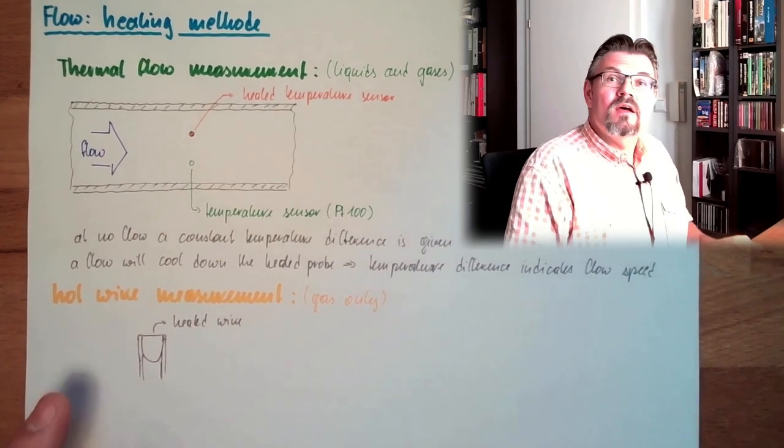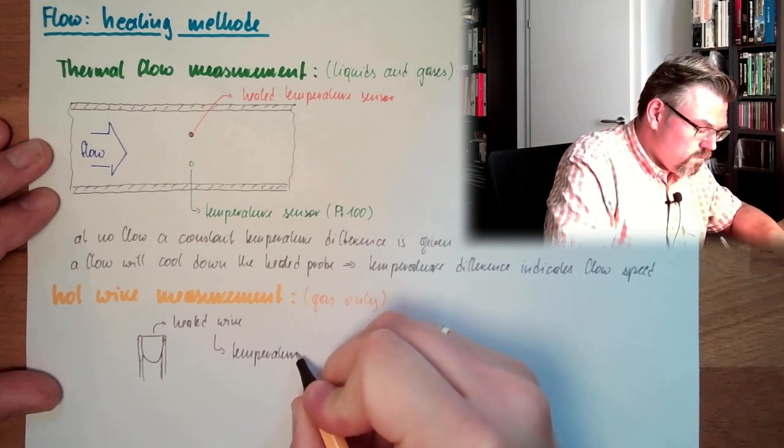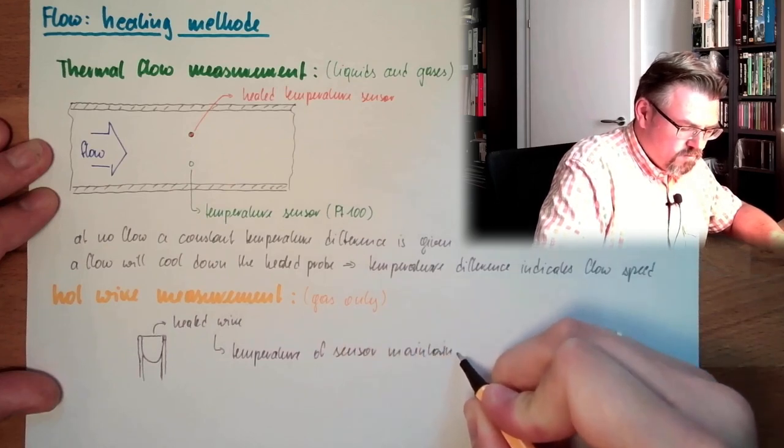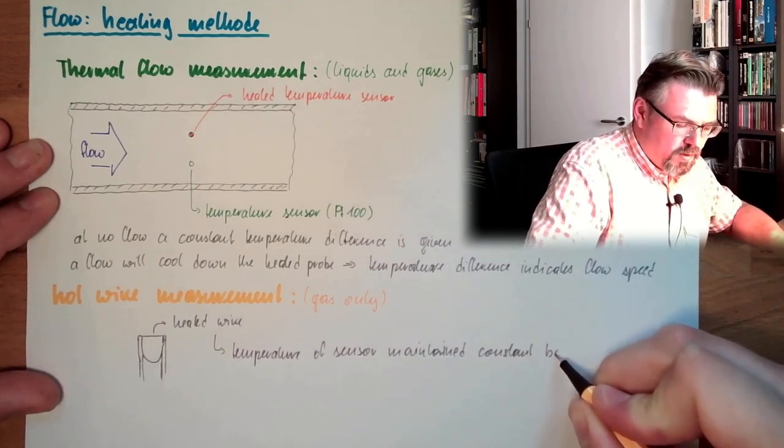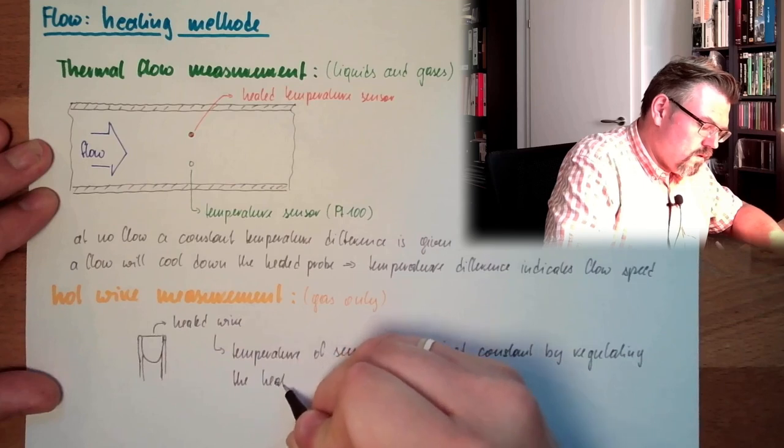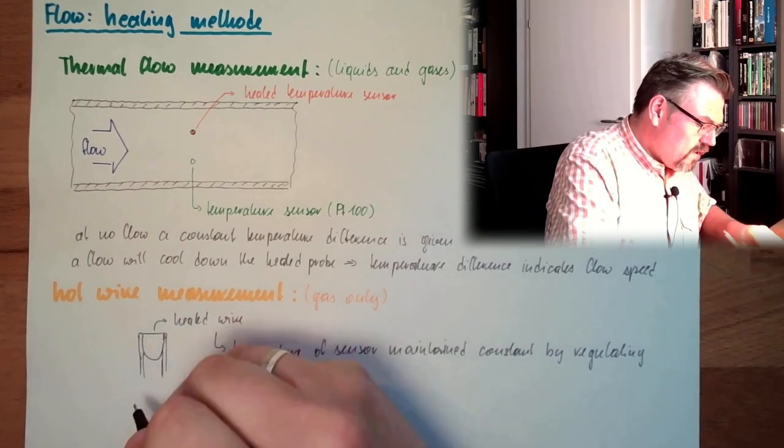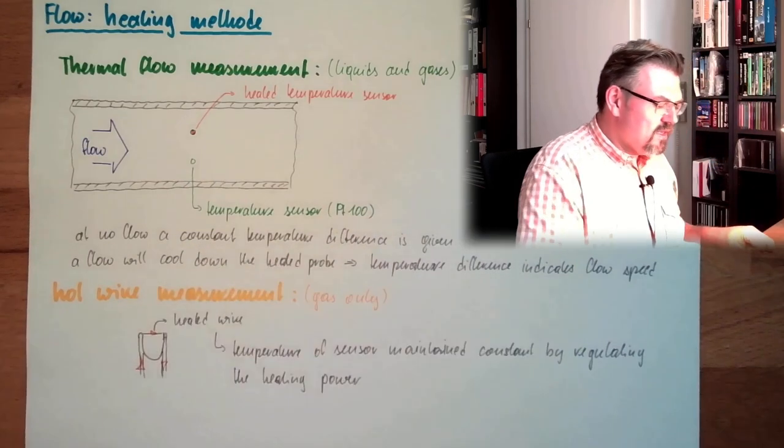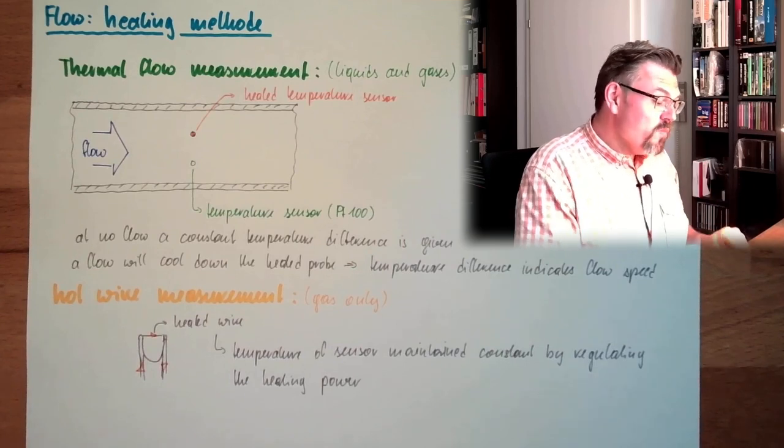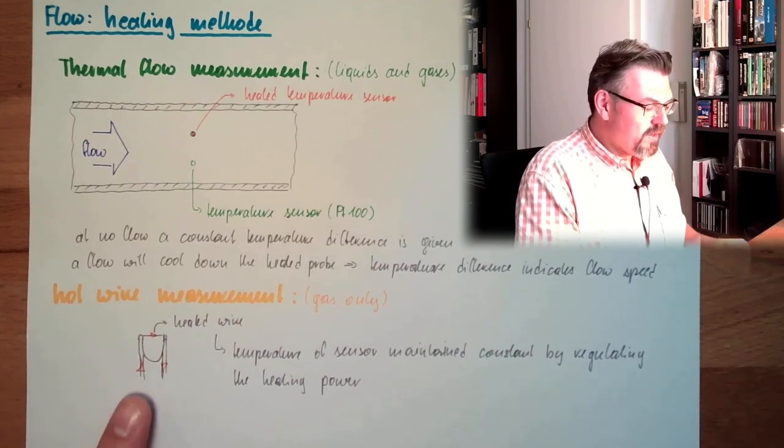And the temperature of the sensor needs to be constant. So the temperature of the sensor is maintained constant by regulating the heating power. So here we are regulating the heating power, there's a current, a heating current driven through this hot wire. And because it's always chilled, wind chill factor and so on, we need more or less heating power to keep the temperature of the wire at the same level. So we maintain the temperature.